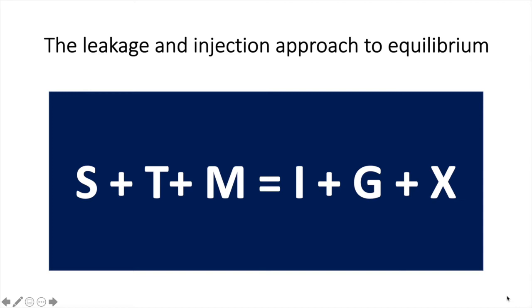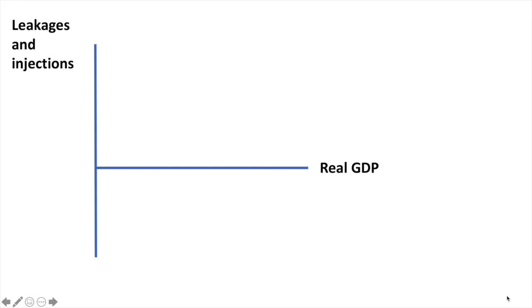Now let's see how this appears on a graph. Our Y-axis represents leakages and injections, whereas our X-axis represents real GDP.